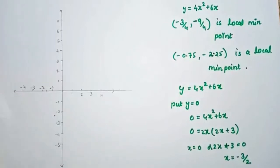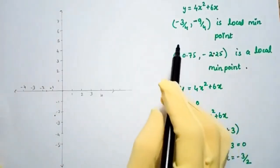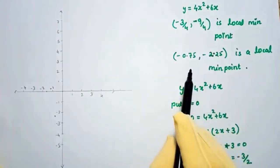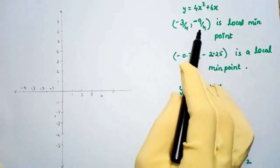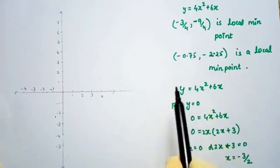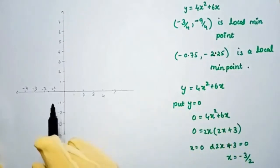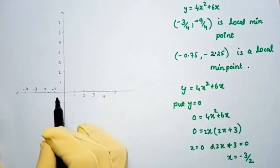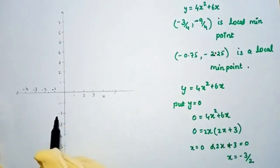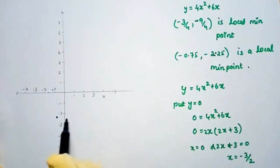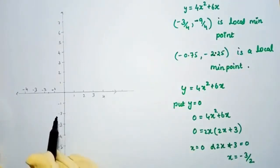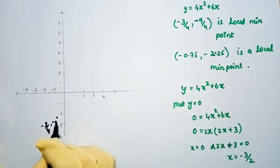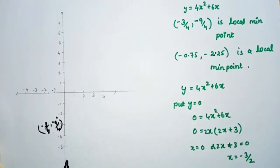We now sketch the graph. The point (−3/4, −9/4), i.e., (−0.75, −2.25), is marked: −0.75 is on the x-axis and −2.25 is on the y-axis. We also need more points. Putting y = 0 into y = 4x² + 6x gives 0 = 2x(2x + 3), so x = 0 or x = −3/2. The three key points are (0, 0), (−3/2, 0), and the local minimum (−3/4, −9/4).